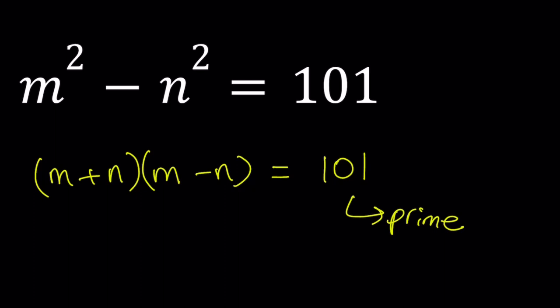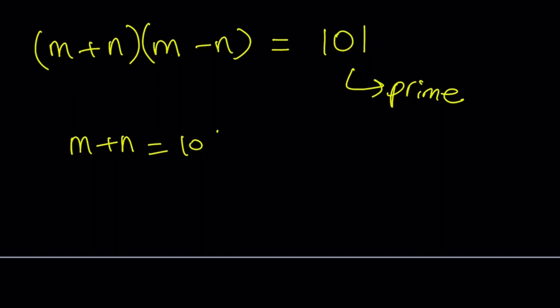Since we're looking for integers, positive and negative, we're going to consider four different cases. So those are the cases. m plus n can be 101. And m minus n can be 1.